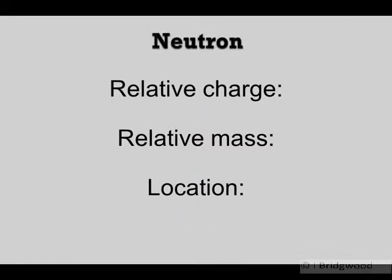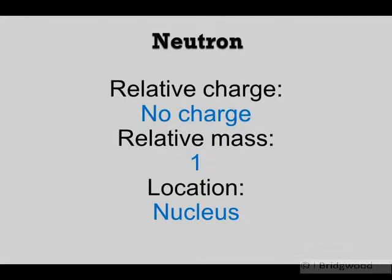The neutron: relative charge, no charge. Relative mass very similar to a proton. Notice that these are not exact relative values. The mass of a neutron is slightly different to the mass of a proton, but its location is very similar in the nucleus. Protons and neutrons which exist in the nucleus are also known as nucleons.